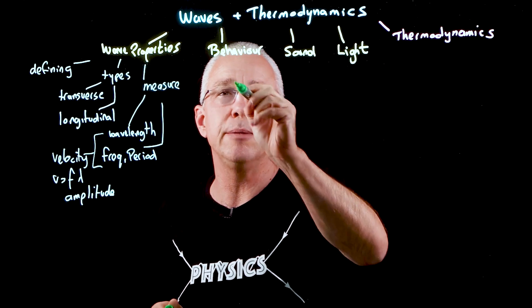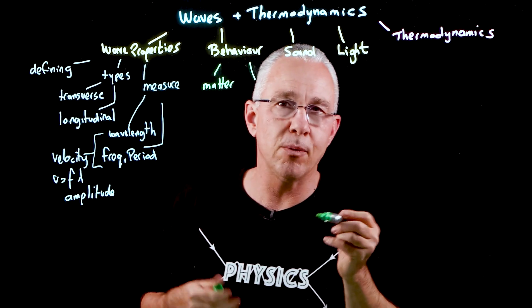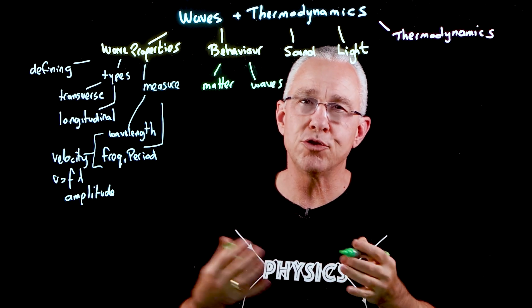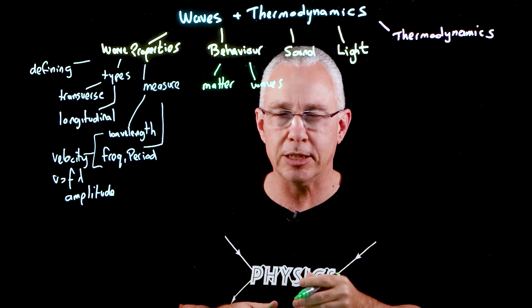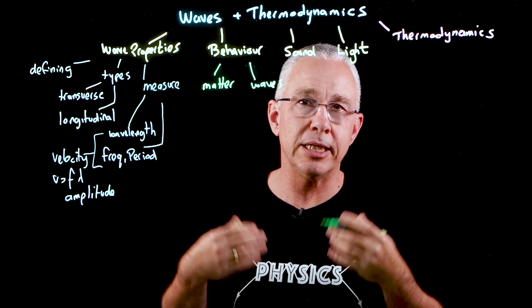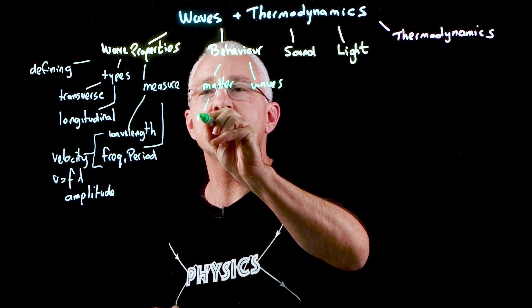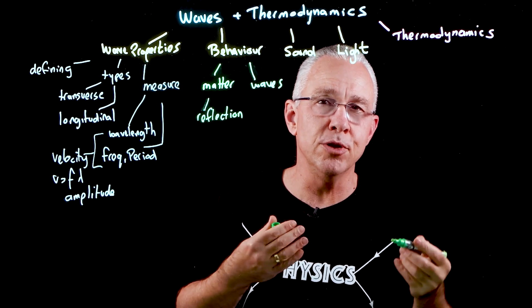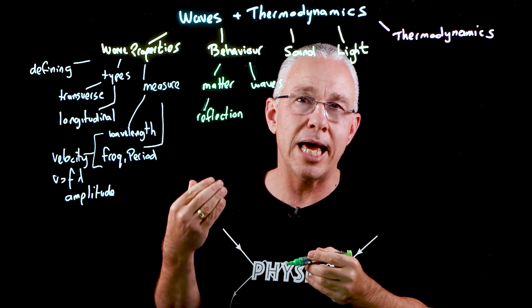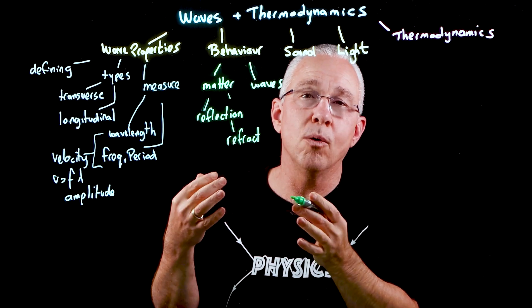Looking at how waves interact, we consider two key principles: how waves interact with matter, and how they interact with other waves. Waves generally need a medium to travel through — with the exception of electromagnetic radiation. When waves interact with matter, they can reflect off a surface, or transmit through it. If they arrive at a boundary at an angle not normal to it, they will also refract.